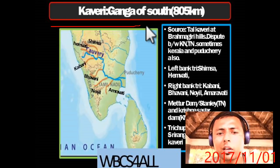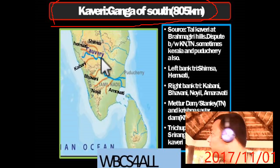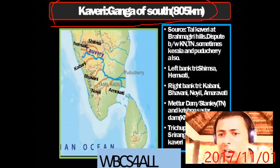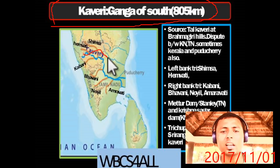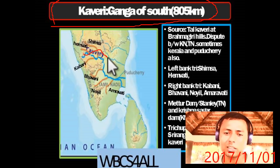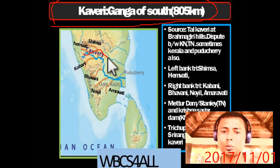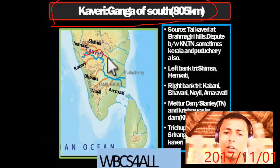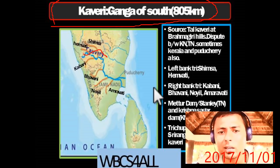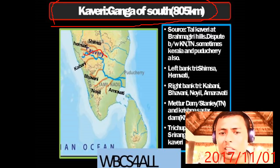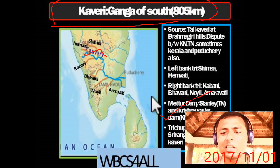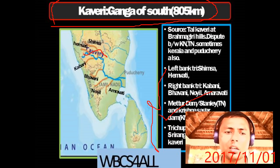The Kaveri River is known as the Ganga of South — its length is 805 km, but it has a large population dependent on it and many tributaries. Its source is Talakaveri at Brahmagiri Hills. It originates near Kerala, flows through Karnataka, then Tamil Nadu and Puducherry. The major water dispute is between Tamil Nadu and Karnataka, though Kerala and Puducherry are also involved. Left bank tributaries: Shimsha and Hemavati. Right bank tributaries: Kabini, Bhavani, Noili, and Amravati. Mettur Dam (also known as Stanley Dam) in Tamil Nadu and Krishna Sagar Dam in Karnataka are both on the Kaveri. Tiruchirapalli and Srirangapatna are located on the Kaveri River.